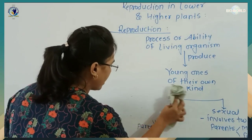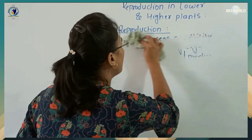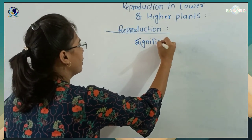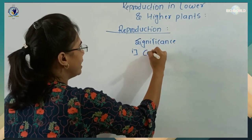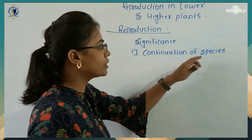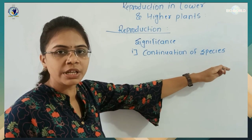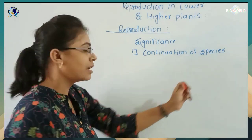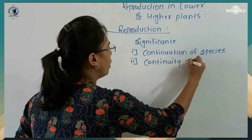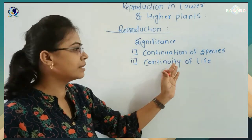Now, what are the significances of reproduction? There are various significances, but mainly two. The first is that it is necessary for the continuation of species — meaning there is a transmission of genetic material from one generation to another. The second significance is that it helps to maintain the continuity of life, as one living organism produces from a pre-existing life.